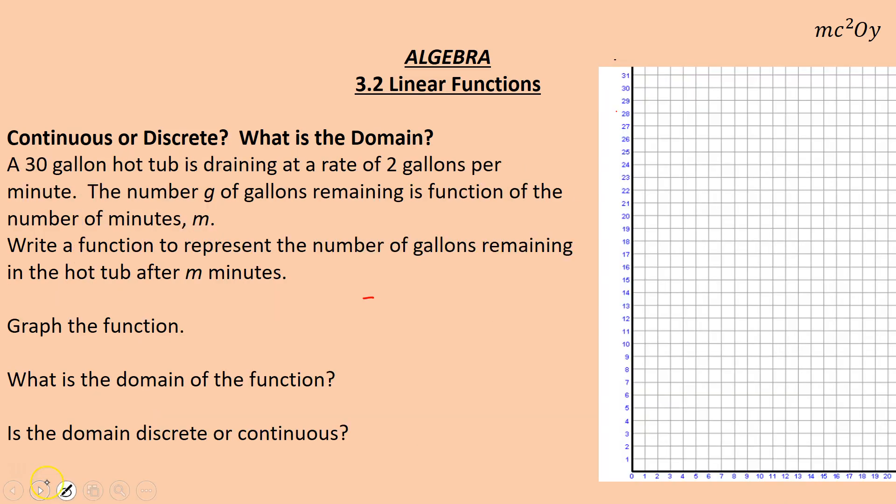All right, let's look at another example. This one says, a 30-gallon hot tub is draining at a rate of 2 gallons per minute. The number of gallons remaining is a function of the number of minutes. Write a function to represent the number of gallons remaining of the hot tub after m minutes.